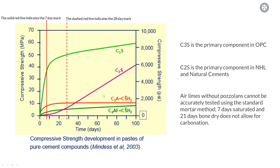If you were to take Otterbein NHL 3.5, for example, whilst it does have dicalcium silicate in it, it also has tricalcium aluminate, which means that your initial strength, especially across your early period, will be quite considerably different to what Sanastia's lime is. And to muddy the waters even further, if you were to then take an HL, which is a blend of Portland cement and usually hydrated lime, then you'd be following a quite different strength curve. So even within the same strength classification, it's not really possible to compare, and especially between the different classifications, you can't compare them at all.